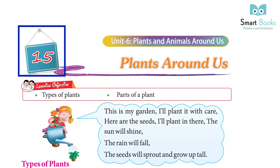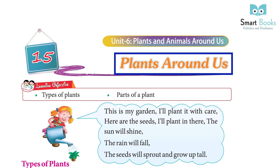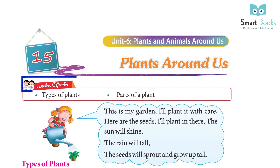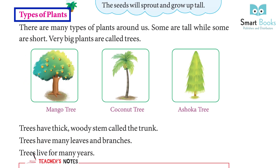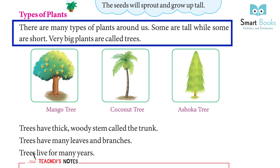Chapter 15: Plants Around Us. Learning objectives: types of plants, parts of a plant. This is my garden, I'll plant it with care. Here are the seeds I'll plant in there. The sun will shine, the rain will fall, the seeds will sprout and grow up tall.